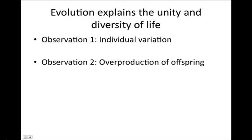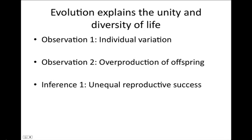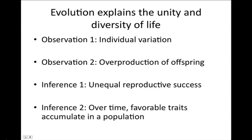Following these observations were two inferences. Inference 1: unequal reproductive success. Darwin inferred that individuals are unequal in their likelihood of surviving and reproducing — those individuals with the heritable traits best suited to the environment will leave the greatest number of healthy, fertile offspring. Inference 2: over time, favorable traits accumulate in a population, so that over many generations a higher and higher proportion of individuals will have the advantageous traits.